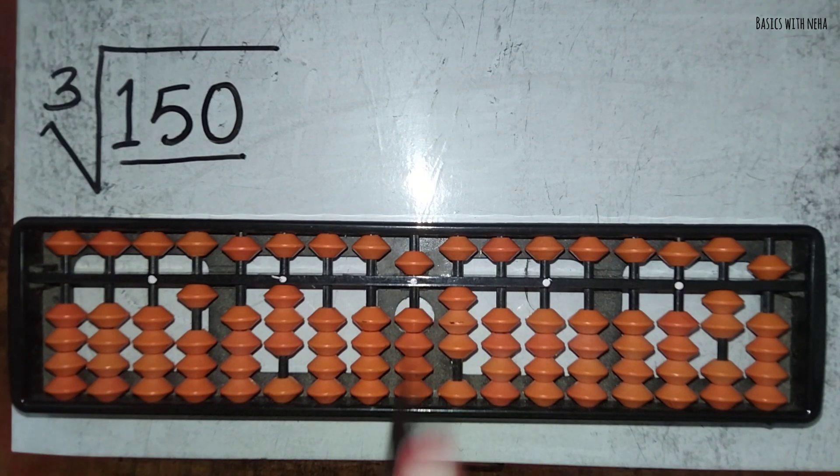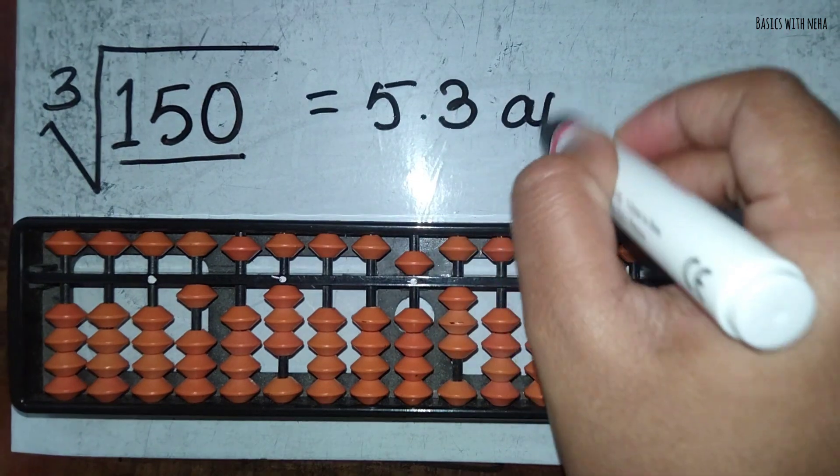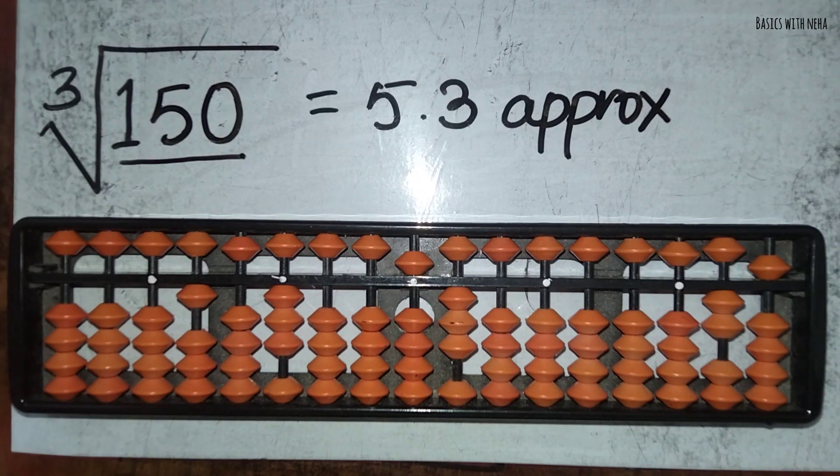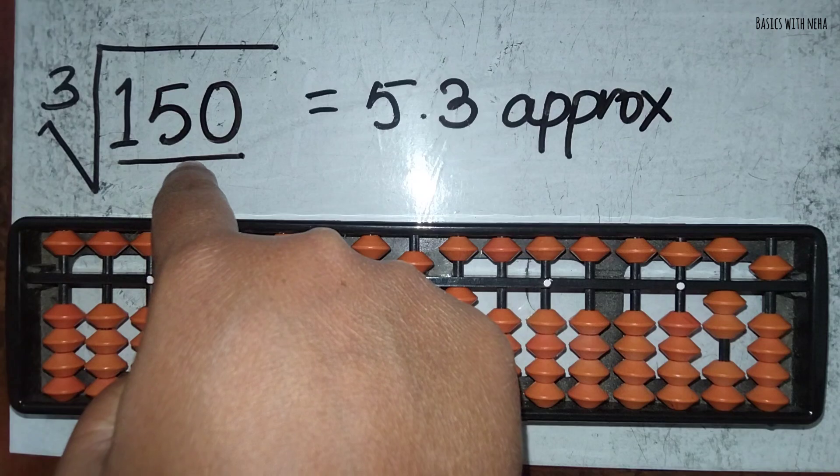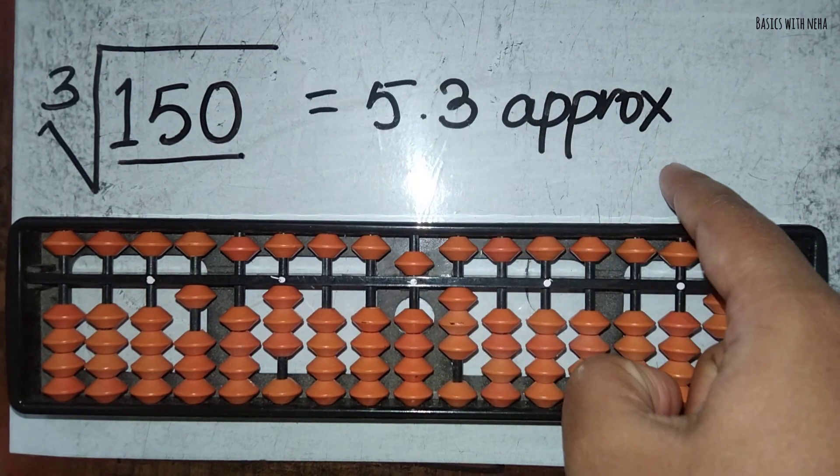So answer to this question is 5.3 approx. Only sometimes we get exact or accurate answers, and other than that, I'm not very sure. It's an imperfect cube definitely, so I'm going to just write 5.3 approx.